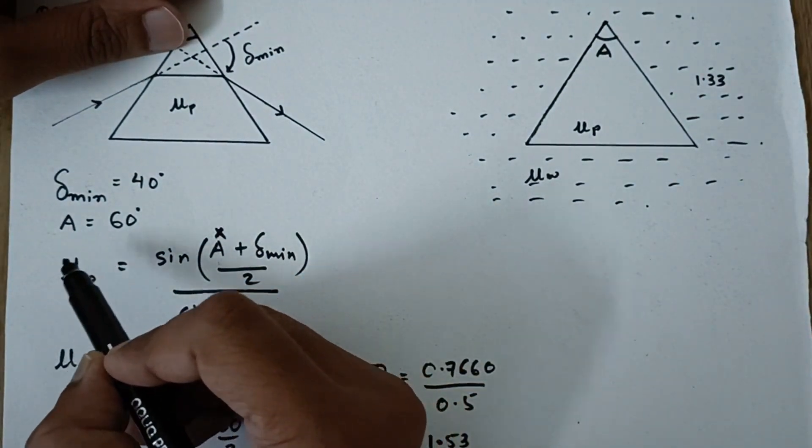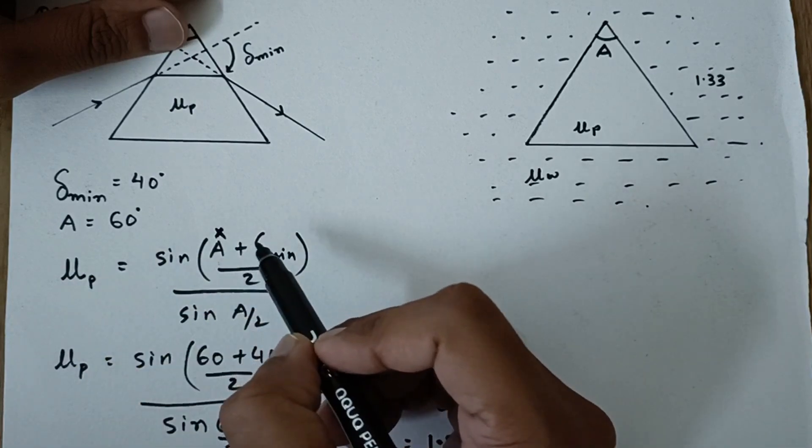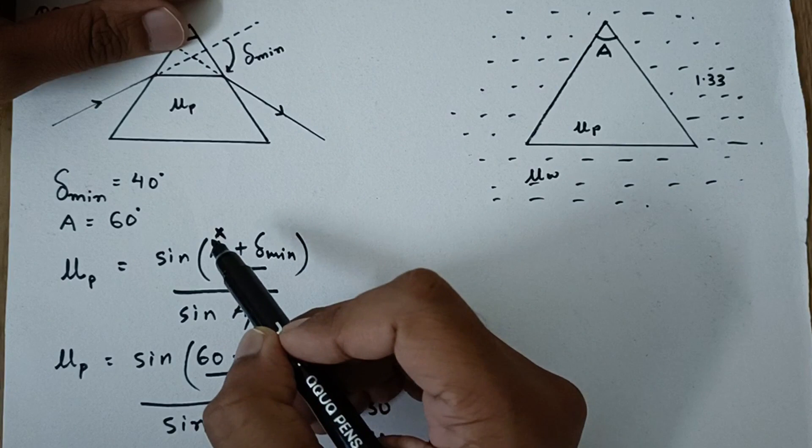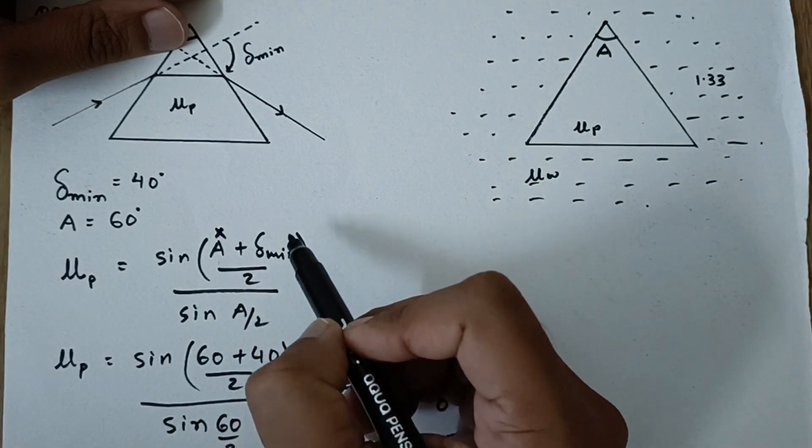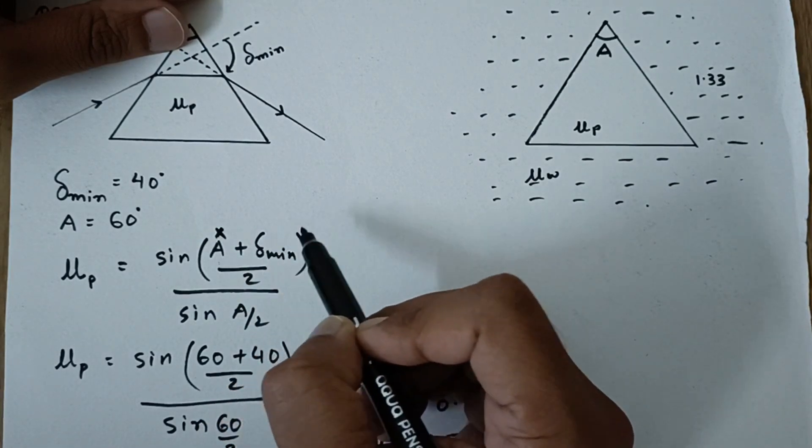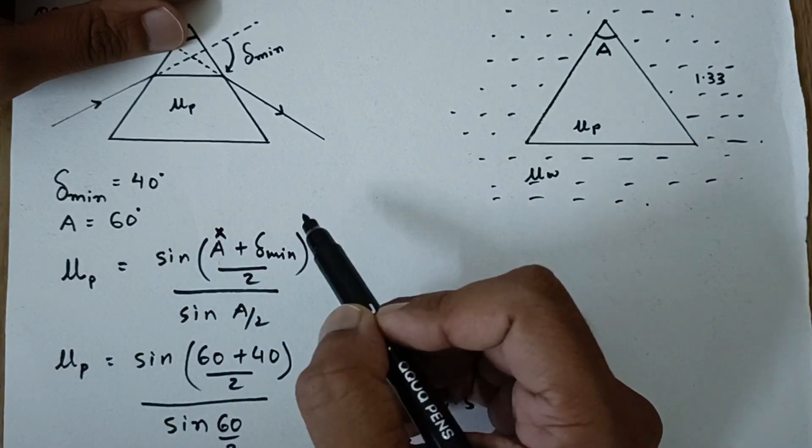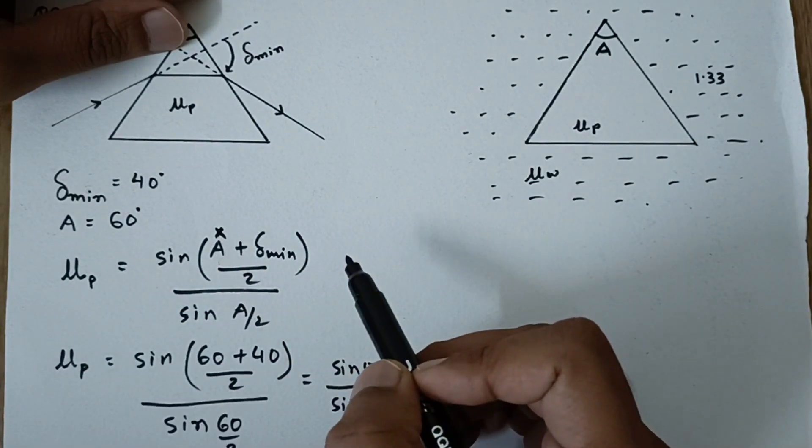So if there is a change in the refractive index, there has to be a change in the delta minimum only, because these two are constants, they cannot be changed. So if this decreases because this is in the numerator part, so if this decreases, this has to decrease, and if this increases, this has to increase, not proportionally.